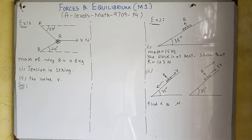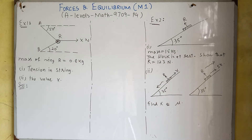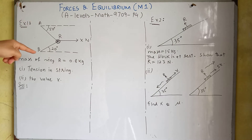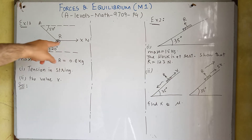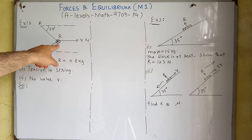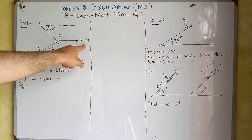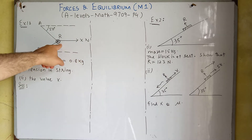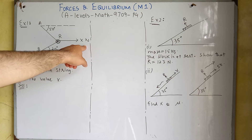We were doing forces and equilibrium and now we will solve some examples. In this example, there is a string AB and we have put a ring R of mass 0.8 kg at this string, and a force of X newton is applied at ring R.